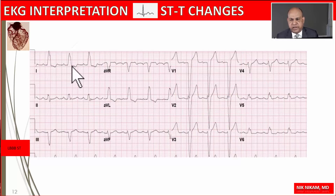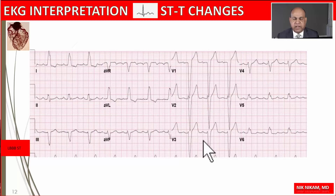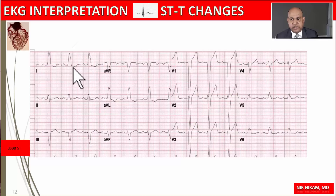We see the ST-T changes in lead I, aVL, and to some degree in the lateral chest leads. We may also see ST elevation and straightening of the ST segment in the anterior leads in patients with left bundle branch block, and this does not represent hyperacute changes of acute MI. With these changes we do not see reciprocal changes in the opposing leads.